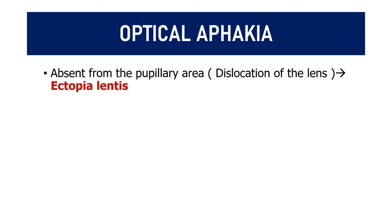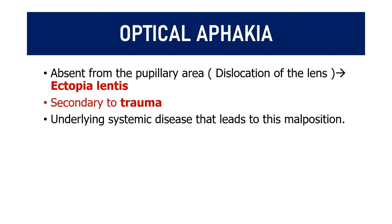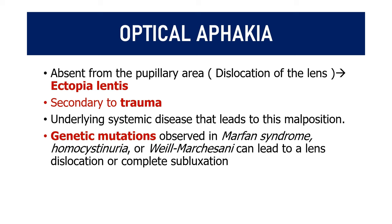Optical aphakia, also called post-dislocation aphakia, occurs when the lens is absent from the pupillary area due to subluxation or dislocation — also known as ectopia lentis. This can occur secondary to trauma, systemic disorders causing weakening of the zonules, or genetic mutations such as in Marfan syndrome, homocystinuria, and Weill-Marchesani syndrome.